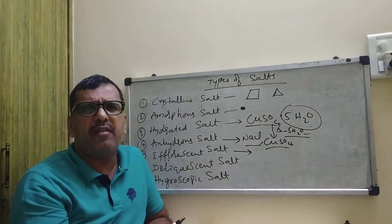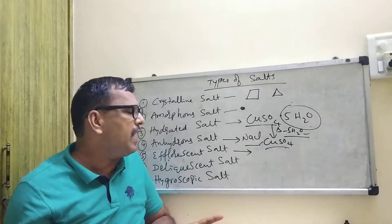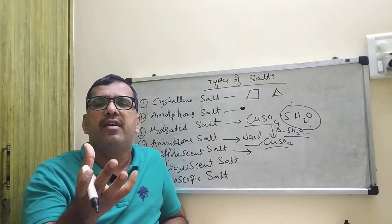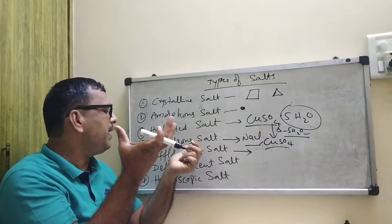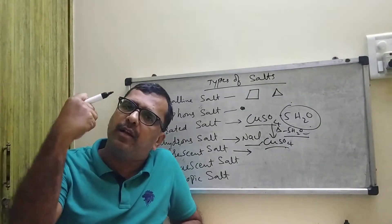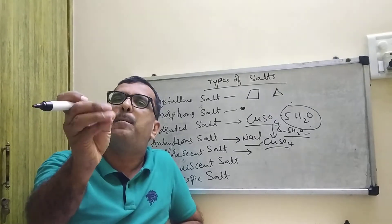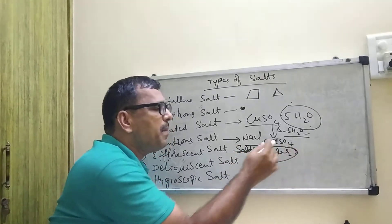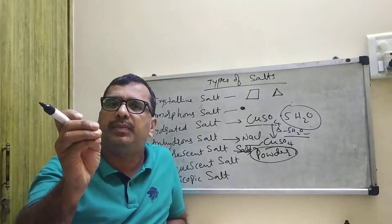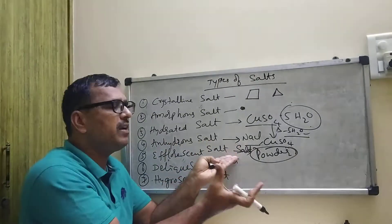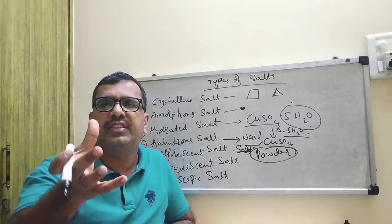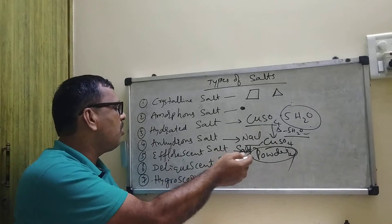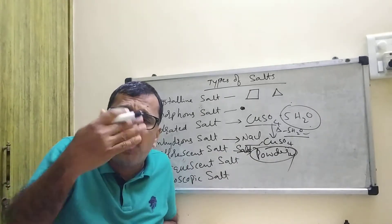What do you mean by effluorescent salt? A hydrated salt, when exposed to air at room temperature, loses its water of crystallization and changes into a powdery amorphous substance. That salt is called an effluorescent salt, and this phenomenon is called effluorescence.